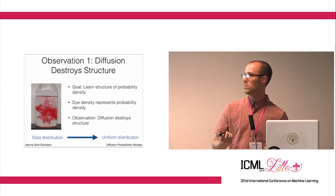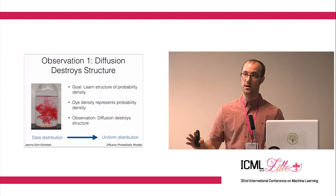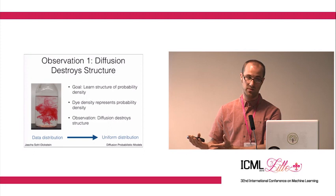One observation is that diffusion destroys the structure in your data set. If you start off with your data distribution and run diffusion for long enough, in this case Brownian motion, then you're going to end up with a totally uninformative distribution. You're just going to end up with the uniform distribution.